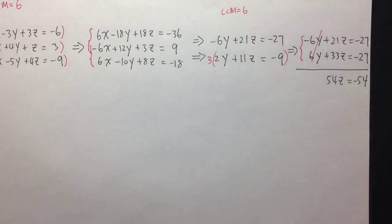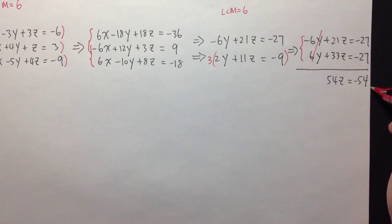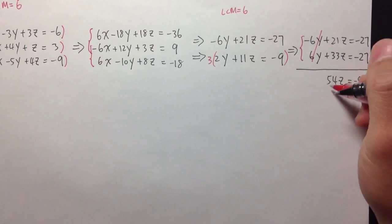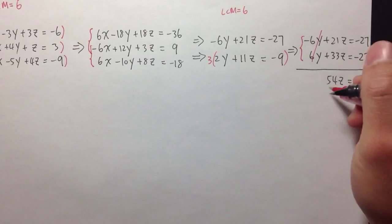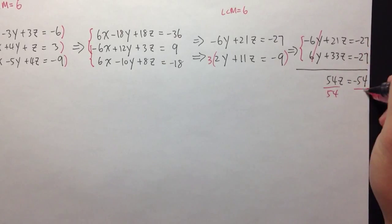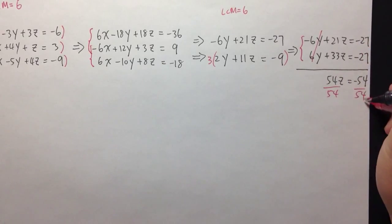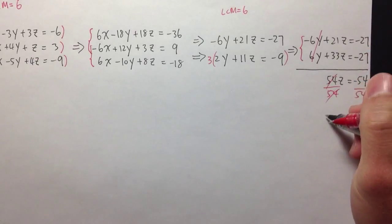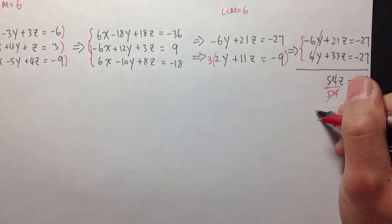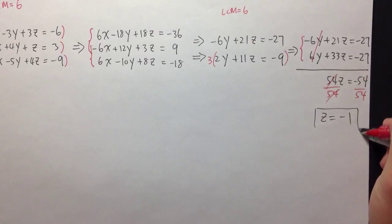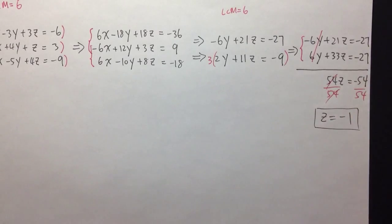So 54z equals negative 54. We can divide both sides by 54, and we get z equals negative 1. So we've got one of our variables.